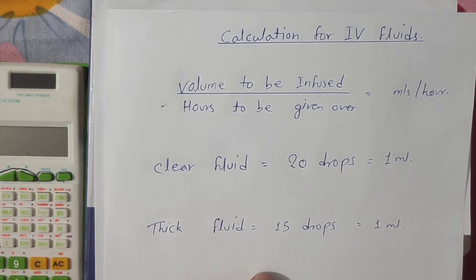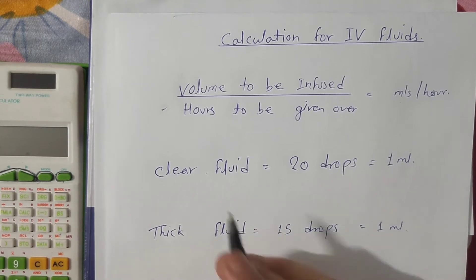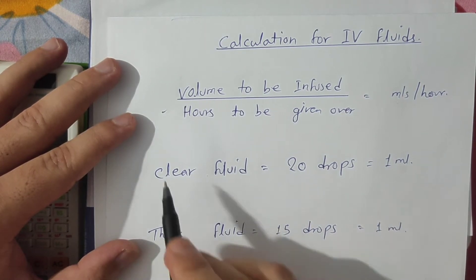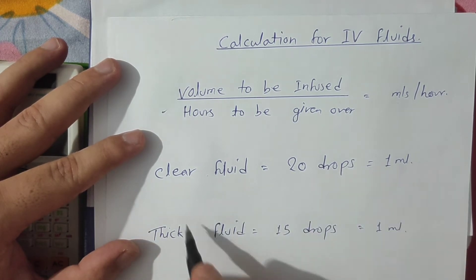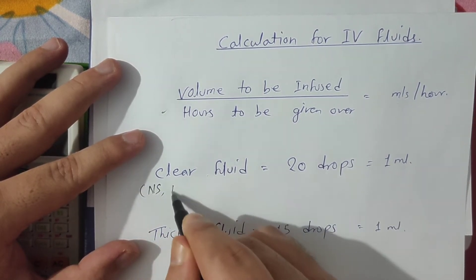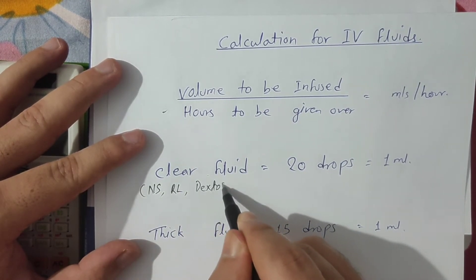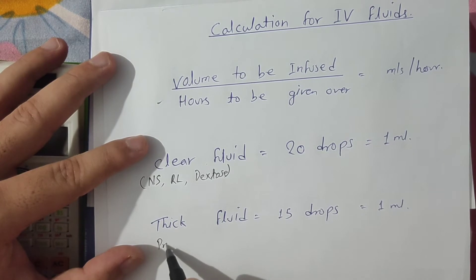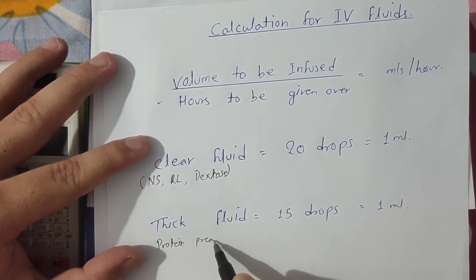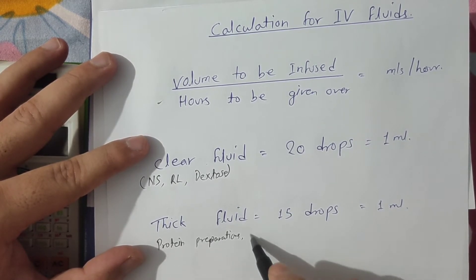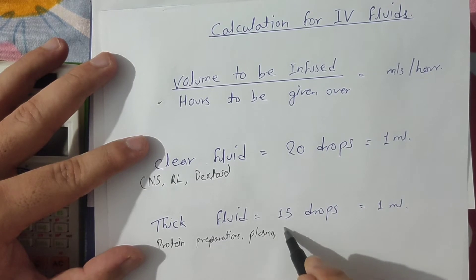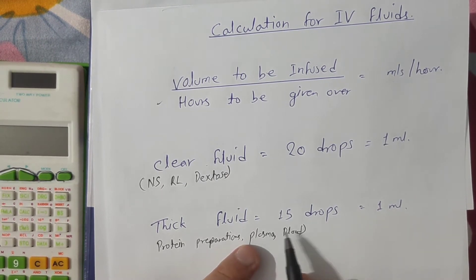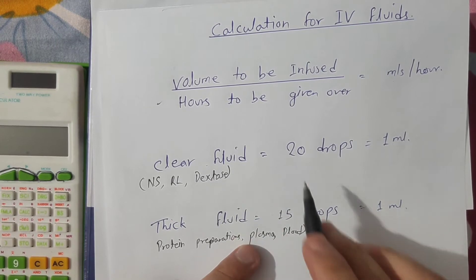The main thing to remember is that clear fluids have 20 drops in 1 ml, and thick fluids have 15 drops in 1 ml. Clear fluids means normal saline, Ringer's lactate, and dextrose. These come under clear fluids, whereas thick fluids means proteinous preparations, protein preparations, plasma, blood plasma, or blood. If you are giving these by IV route, they are thick and only 15 drops per ml, whereas clear fluids are 20 drops per ml.